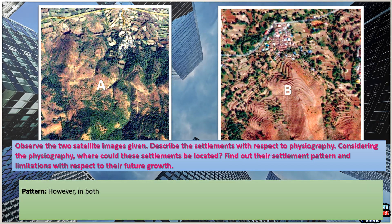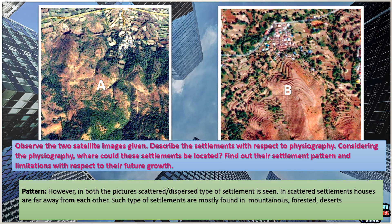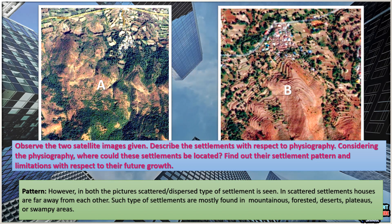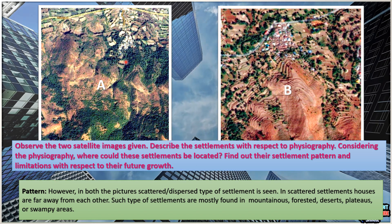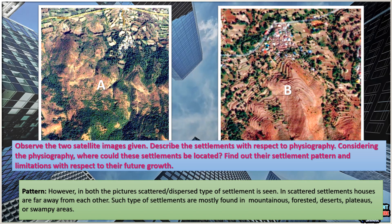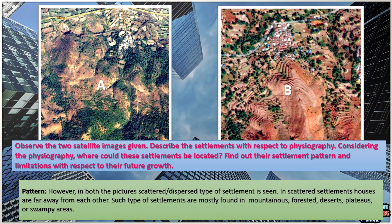Describing the settlements with respect to physiography: in both pictures, scattered type of settlement is seen. This is a mountainous region, so we see scattered type of settlements. In scattered settlements, houses are far away from each other, and such settlements are mostly found in mountainous, forested, desert, plateau, or swampy areas.